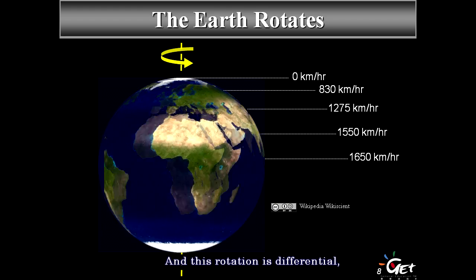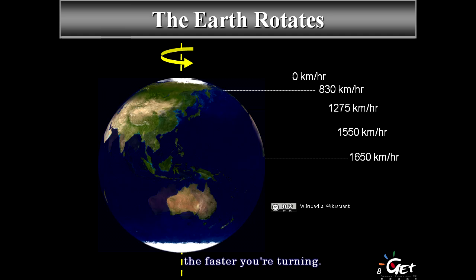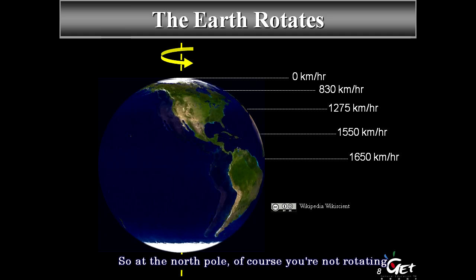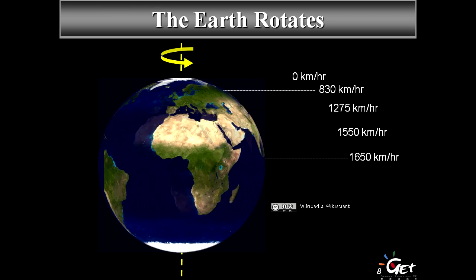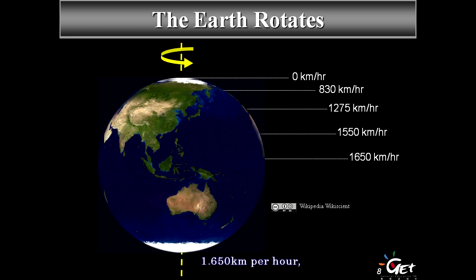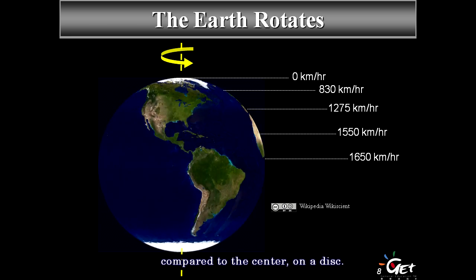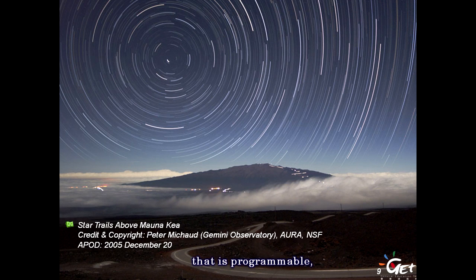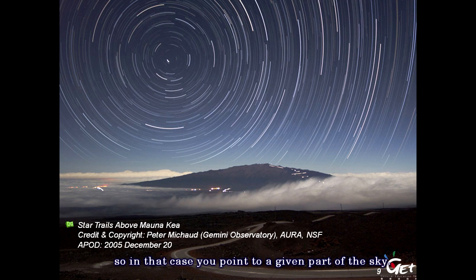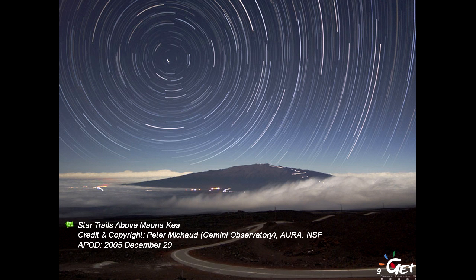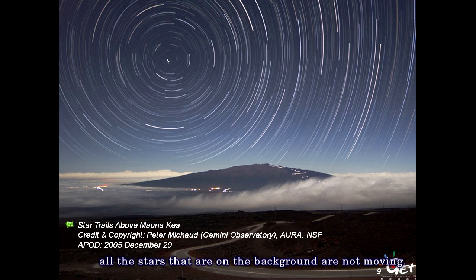The Earth turns on its own axis from west to east, and this rotation is differential — the closer you are to the equator, the faster you're turning. At the North Pole you're not moving; at the equator you're turning at around 1,650 km/h compared to the center. If you have a programmable camera, you can do a long-exposure experiment pointing toward a fixed part of the sky. Here it's exposed for three or four hours, and you see star trails — showing the effect of Earth's rotation on its axis.